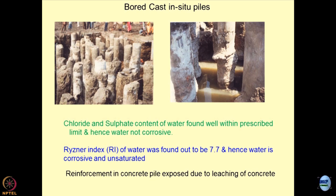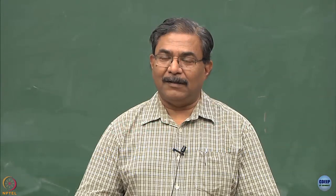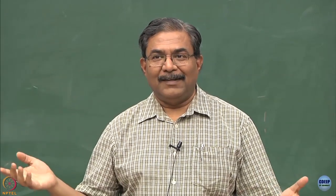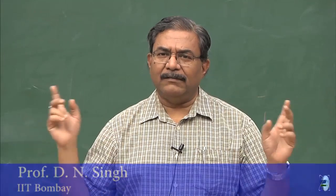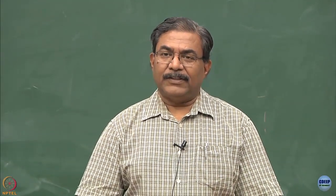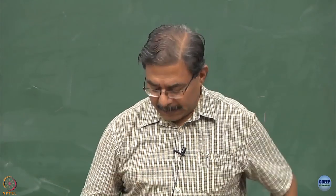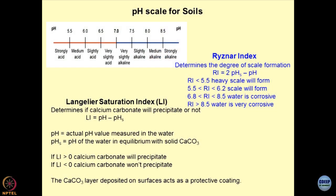These type of concepts were not discussed earlier in the subject. We only bothered about bearing capacity and thought it would remain the same for time immemorial, but now we realize that more and more industrialization and pollution is a threat to existing structures. This forces us to study the pH of soils, the pH of groundwater, and the calcium concentration of groundwater. The pH scale defines acidity or basicity — a scale of 7 is neutral, less than 7 is more acidic, and greater than 7 is more alkaline.